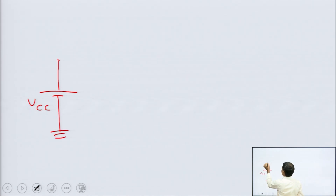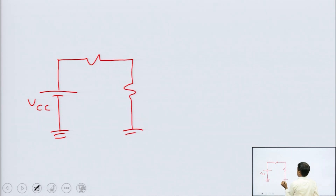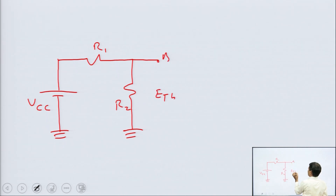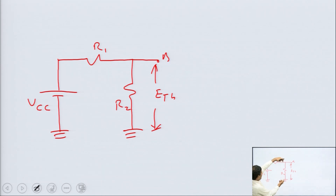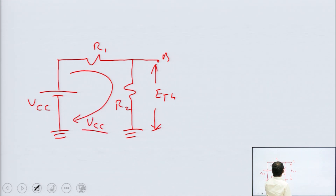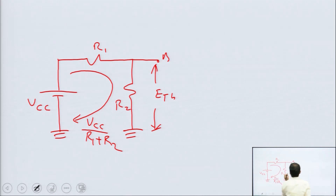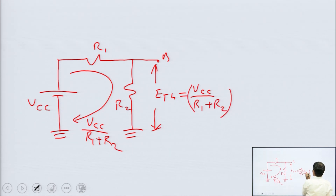To calculate ETH: the circuit has VCC, R1, and R2. ETH is the voltage across R2. To find the voltage across R2 we first find the current, which is VCC upon R1 plus R2, since this is a series circuit. Therefore ETH equals VCC upon R1 plus R2, multiplied by R2. This gives us the value of ETH.